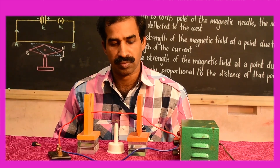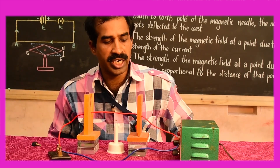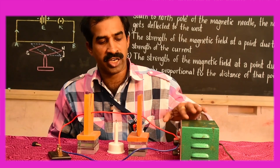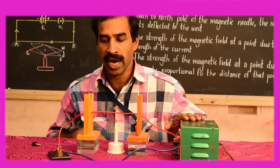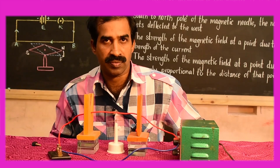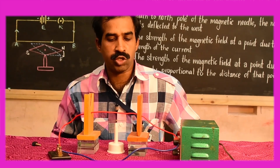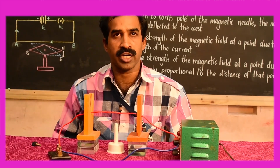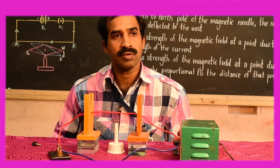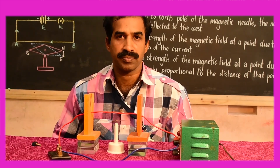Connect the conducting wire to the battery and plug key in series. If there is no flow of current, then the magnetic needle will not show any deflection.